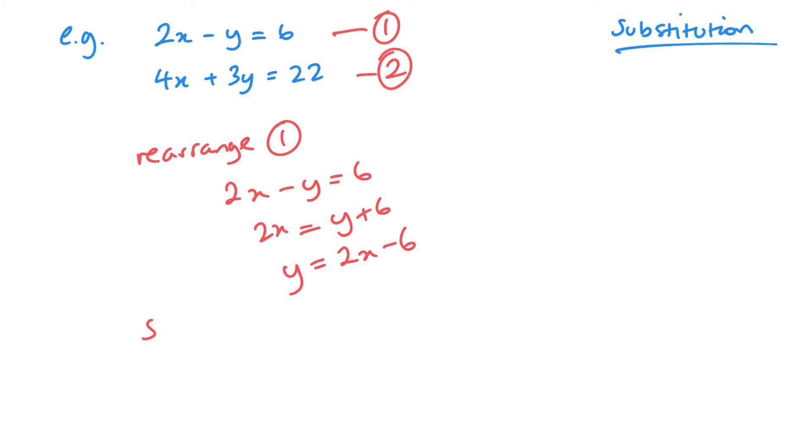Now I'm going to substitute this into my equation 2, my other equation. So that means I've got 4x plus 3, now instead of y I've got 2x minus 6, and that equals 22. So expand my brackets: 4x plus 6x minus 18 equals 22. And you can see here I'm going to have 10x equals 40. So just like before, x is going to be equal to 4.